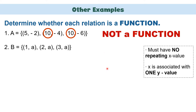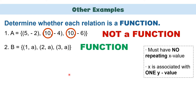Another example: set B equals (1, A), (2, A), and (3, A). Looking at the x-values, we have 1, 2, and 3. There is no repeating x-value. Therefore, this one is a function.